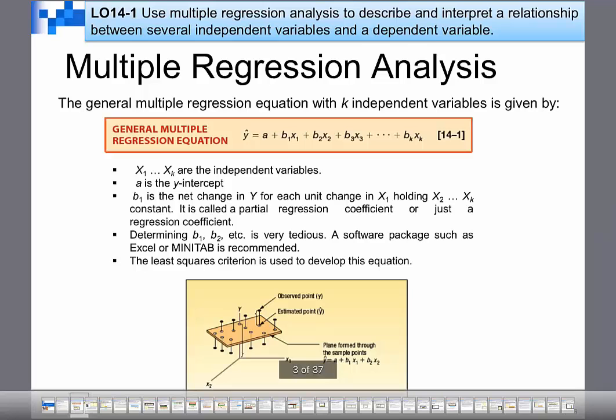So when it says that beta 1 represents the change, the net change in Y for each unit change in X, holding X2, et cetera, constant, that means you're saying to yourself: